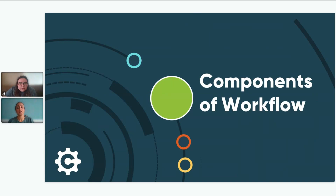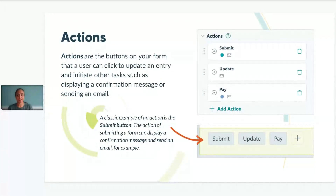Now let's go over the different components that make workflow what it is. Workflow actions are the buttons on your form that a user can select to perform a certain task, such as submitting an application or approving a PTO request. Actions enable you to achieve many things in your workflow — an action can display a confirmation message or send an email, among many other things. Essentially, actions are the catalysts that move your workflow along; without them, you wouldn't be able to proceed to the next step.